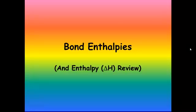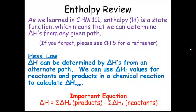Let's talk about bond enthalpies, and along with that we're going to have an enthalpy or delta H review. As we learned in Chem 111, enthalpy is a state function, and that means we can determine delta H's from any given path. We can use the initial state and the final state to find the change in enthalpy for the whole reaction. If you forgot, go to chapter 5 in your text for a small refresher, because we are going to use this now and later on in our thermo chapter.